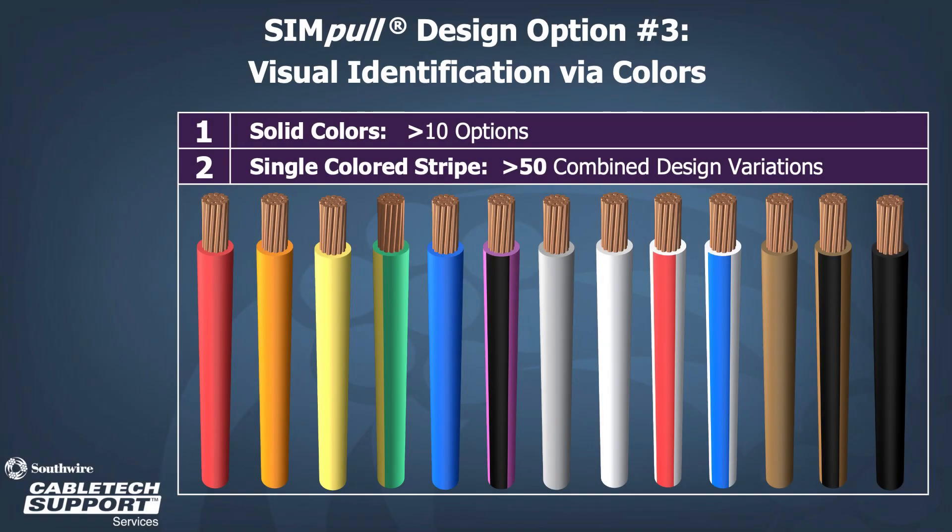Our third design option is for visual identification. Southwire offers more than 10 different color options for solid colors, and a variety of striping options that make far more than 50 design variations.